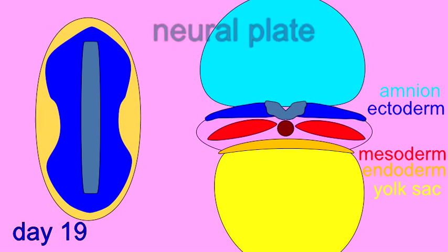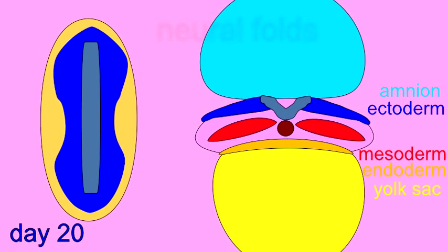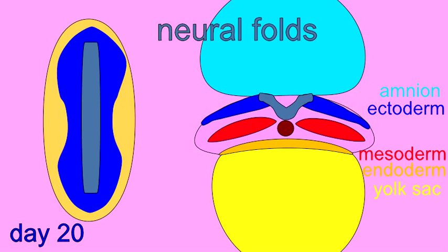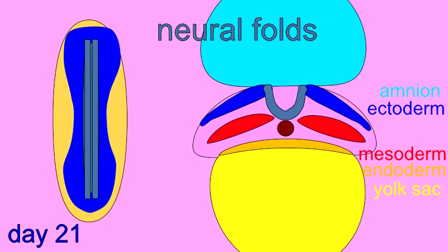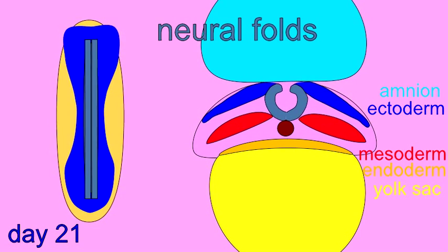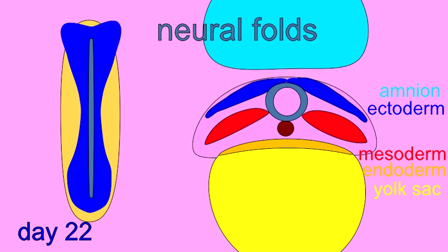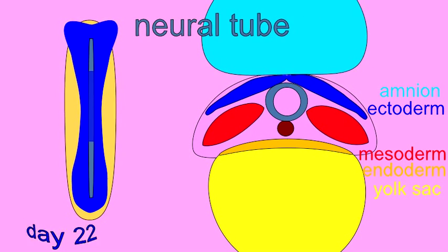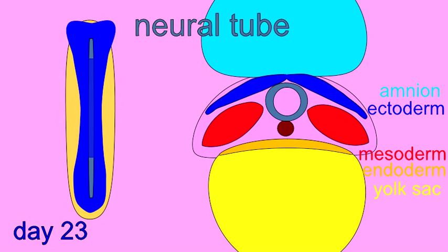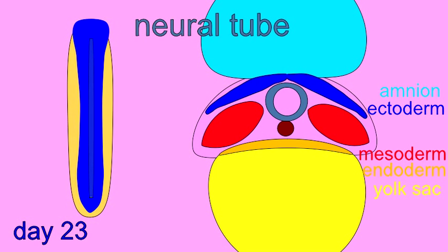These then begin to invaginate to form neural folds, and the neural folds then fuse over the dorsal surface of the embryo to form the neural tube. This neural tube is hollow, as is the nervous system.